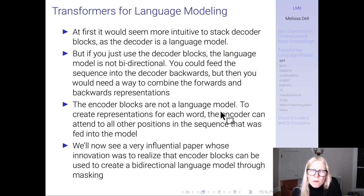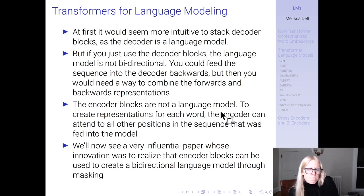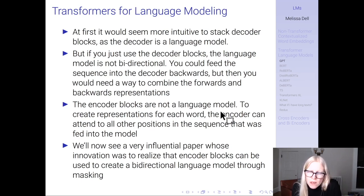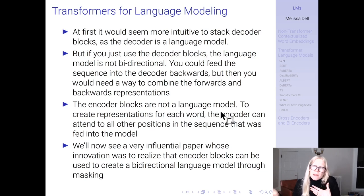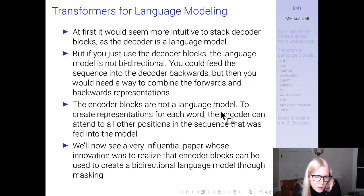In contrast, encoder blocks have unmasked self-attention, so you can see both the forward and backward context. That's advantageous when you want a contextualized representation of a word in a sequence, because what comes after it also influences its meaning. We'll now see a very influential paper whose innovation was to realize that encoder blocks can be used to create a bidirectional language model through masking.